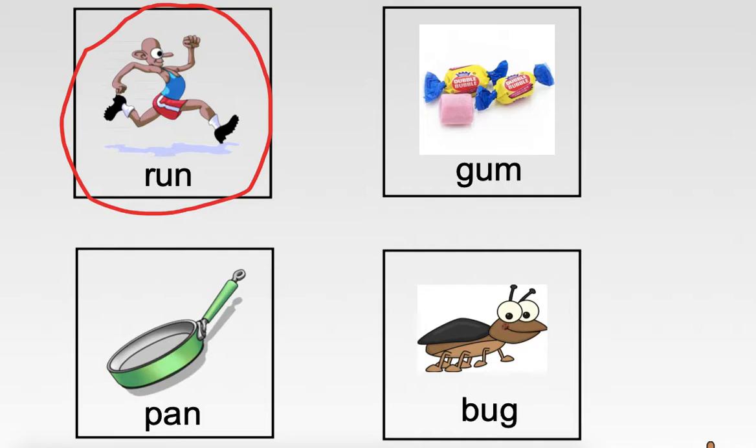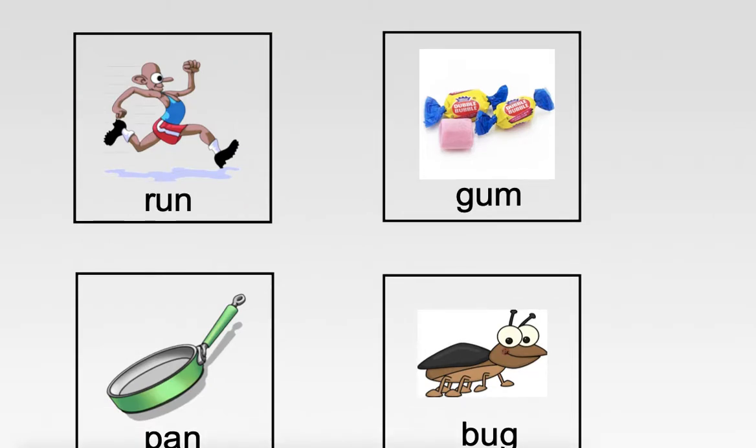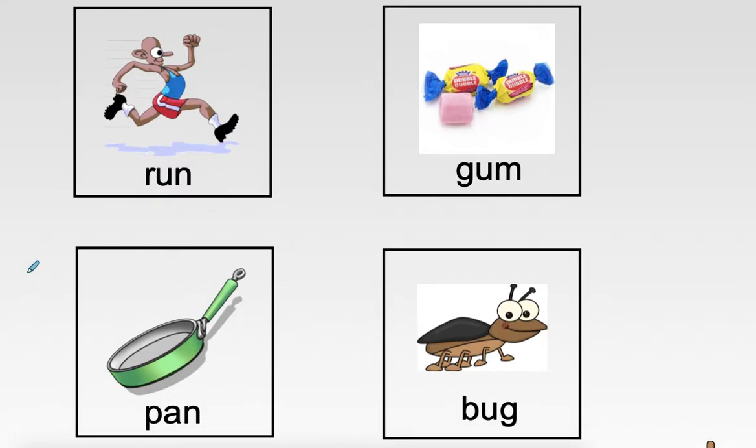We have one more picture in this set. Can you point to B, A, G? B, A, G. Bug. Bug is right here. Did you help me with this? Great job.